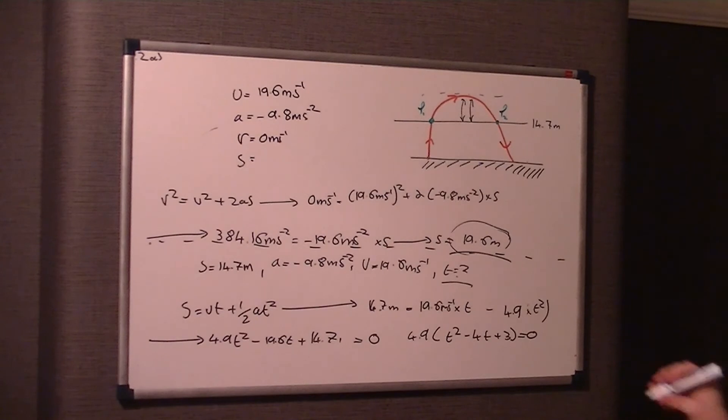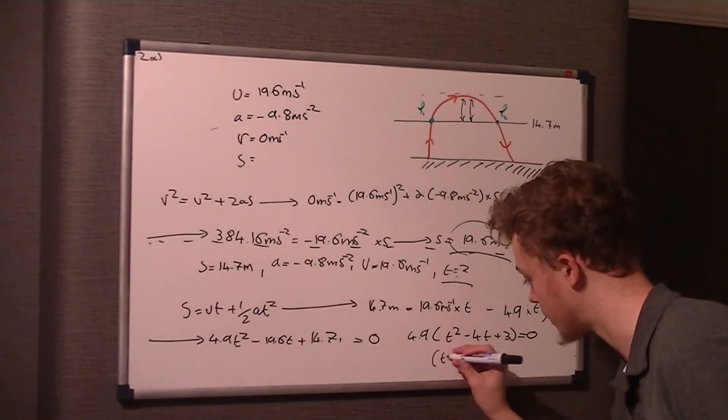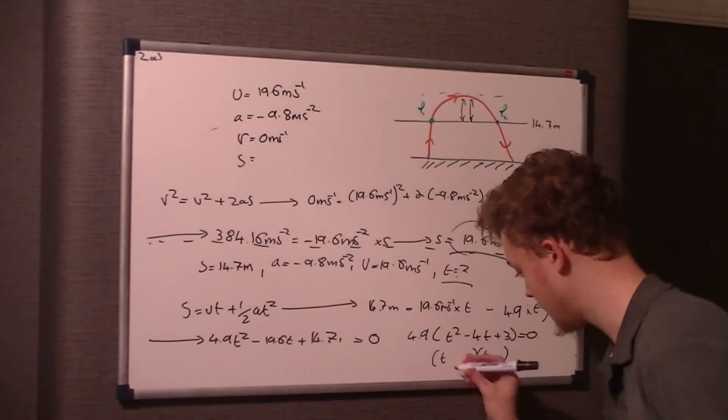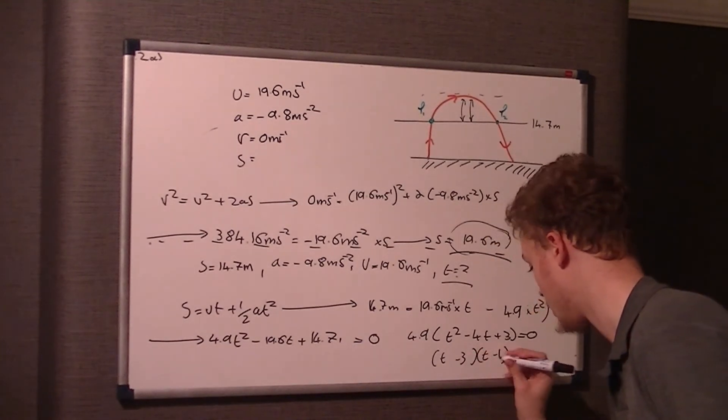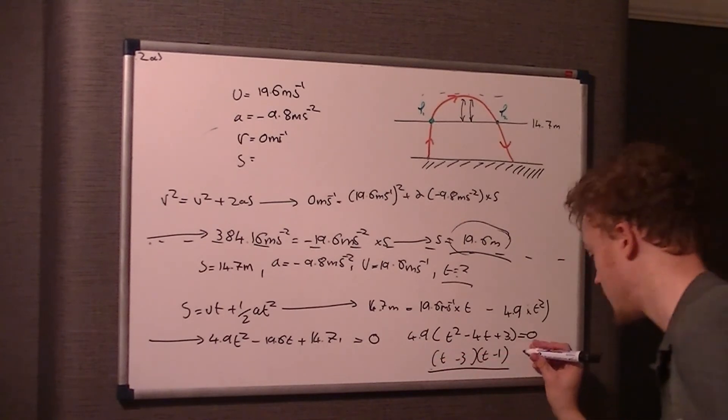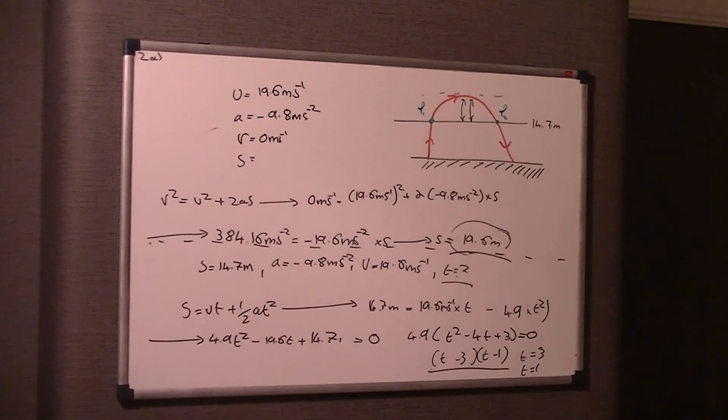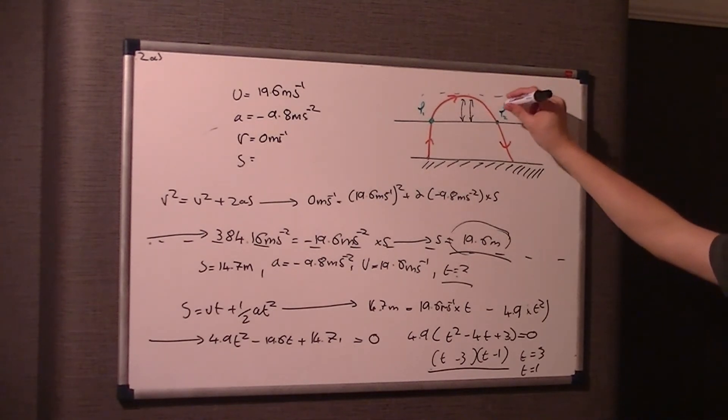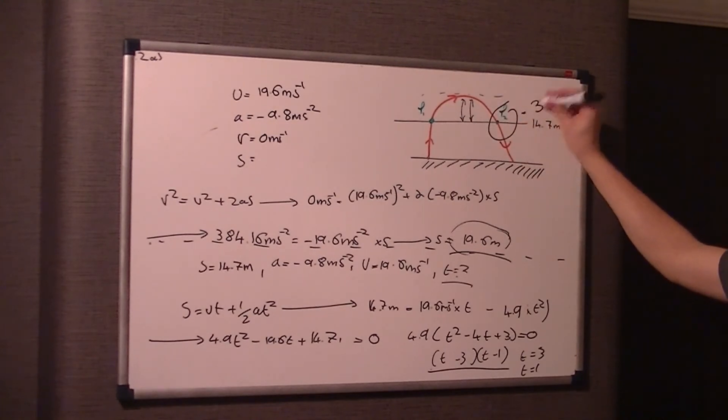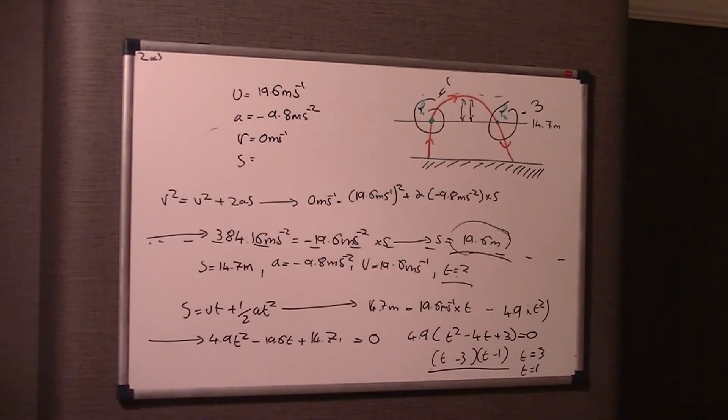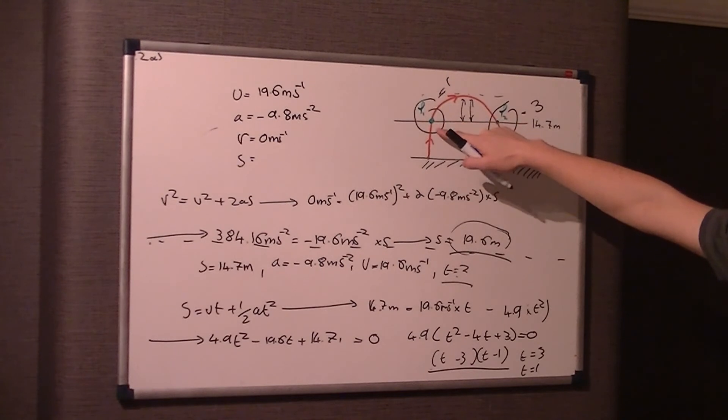That's just a case of factorizing this. So therefore it's t in one bracket, t in another bracket, and it's t minus 3, t minus 1. So we've got value of t being equal to 3, or t being equal to 1. So if t is equal to 3, that's obviously the second value for t, which is t2, so that equals 3, and t1 is equal to 1.